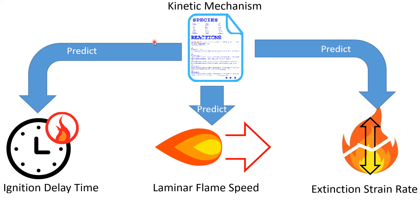We validate kinetic mechanisms by using them to predict fundamental flame properties. The three most common validation metrics for a kinetic mechanism are the ignition delay time, the laminar flame speed, and the extinction strain rate.